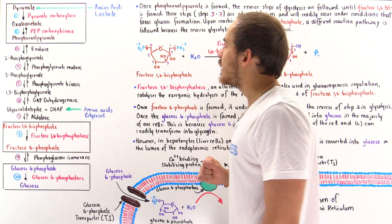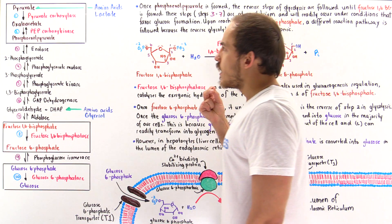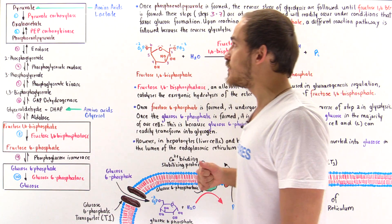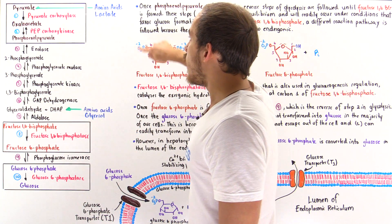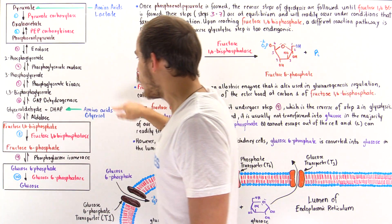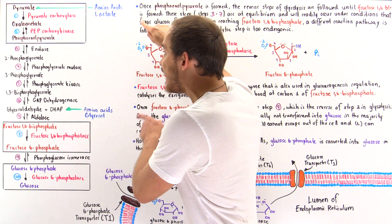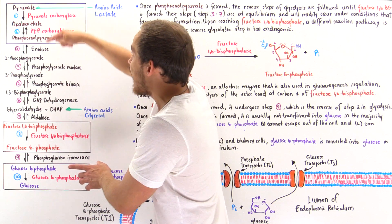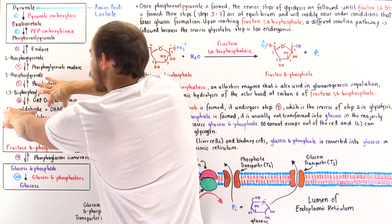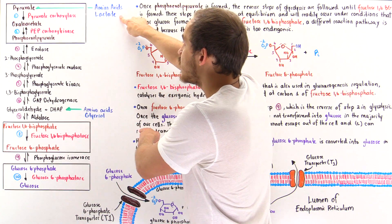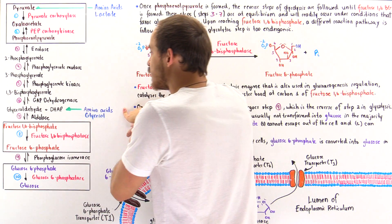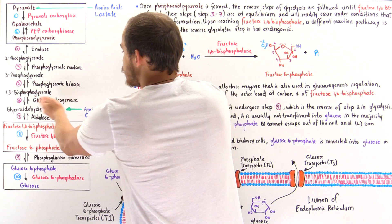There are different non-sugar precursor molecules that can be used to form glucose. We discussed pyruvate, but also lactate, amino acids, and glycerol. Depending on the type, amino acids can be transformed into either pyruvate or DHAP to enter gluconeogenesis. Lactate is transformed into pyruvate before entering the cycle. Glycerol is transformed into DHAP, dihydroxyacetone phosphate, to enter the pathway.